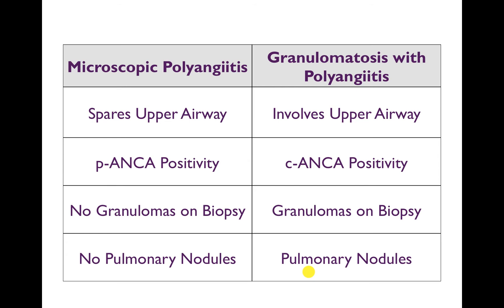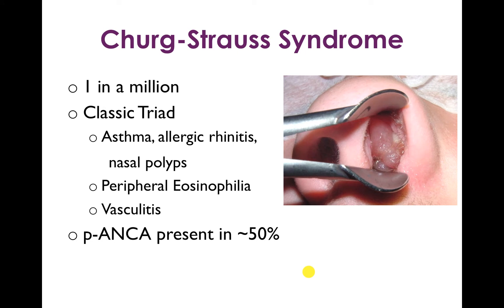Those slides help contrast microscopic polyangiitis from diseases it might be confused with. The last ANCA-associated vasculitis is Churg-Strauss syndrome. Fortunately it's very rare, about one in a million, and it has a classic triad: asthma, allergic rhinitis, and nasal polyps.